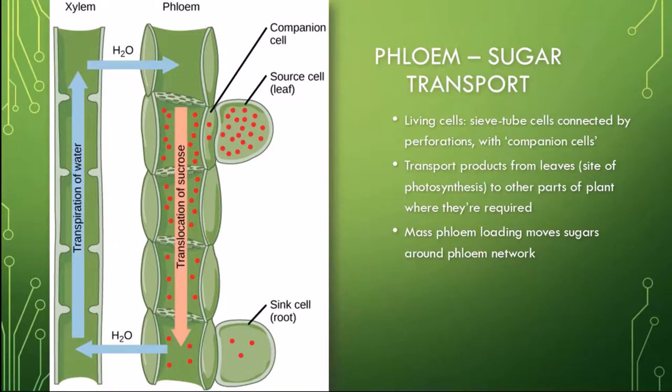Transport through the phloem is complex, but it is generally considered to be an active mechanism driven by an osmotically generated pressure gradient. This process is described as mass phloem loading. As products such as sugars build up around the source or the leaves, water molecules are drawn into the phloem from the xylem to these regions of high solute concentrations. As the pressure builds up from the entering water, the phloem increases in pressure, allowing the contents to be pushed down the pressure gradient.